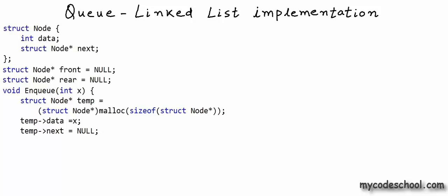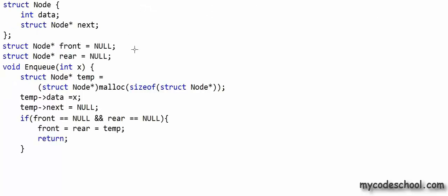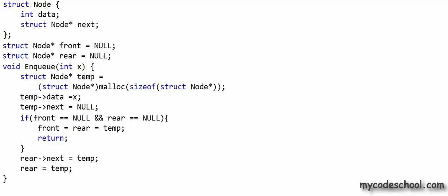There are two cases in enqueue. If the queue is empty, both front and rear are null, so we simply set both front and rear to the address of the new node and return. Otherwise, because we already have a pointer to the rear node, we set the address part of the current rear to the address of the newly created node, then update rear to point to this new node. I am assuming you already know how to implement a linked list — if you want to refresh your concepts, you can check earlier lessons in this series.